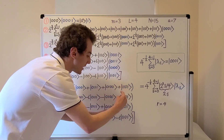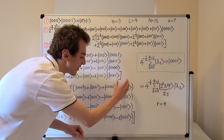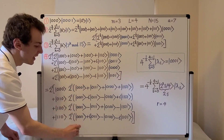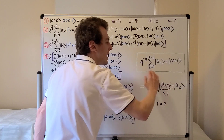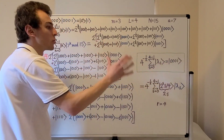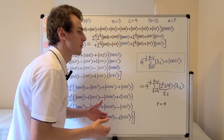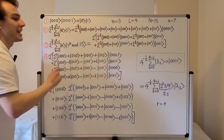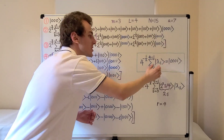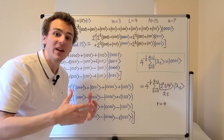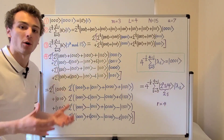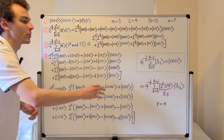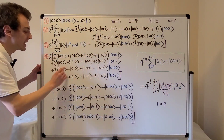All of these terms cancel and only the ket one state remains. This is a very important observation — it connects back to the general procedure and the quantum circuit diagram for order finding. When we initialize the second register in the state ket one, we're actually initializing it in a superposition of eigenstates of that unitary operator, and we're applying the phase estimation procedure to that unitary operator. That is why it is a very special unitary operator, and these eigenstates are very special, emerging in this condensed notation for the state in step four.